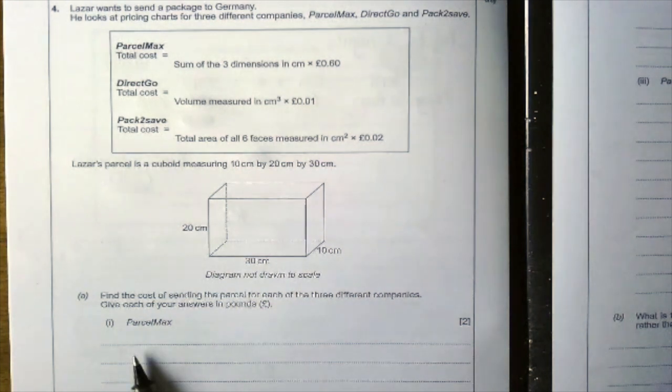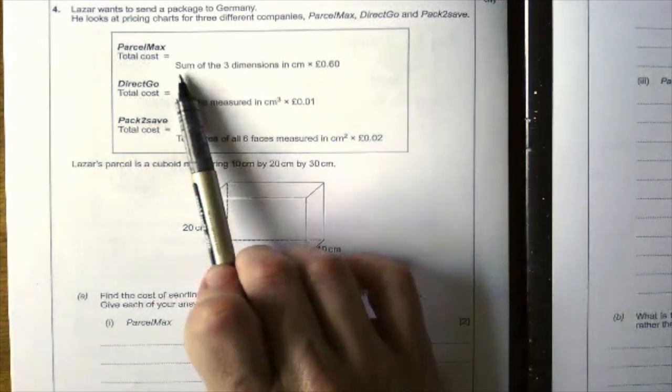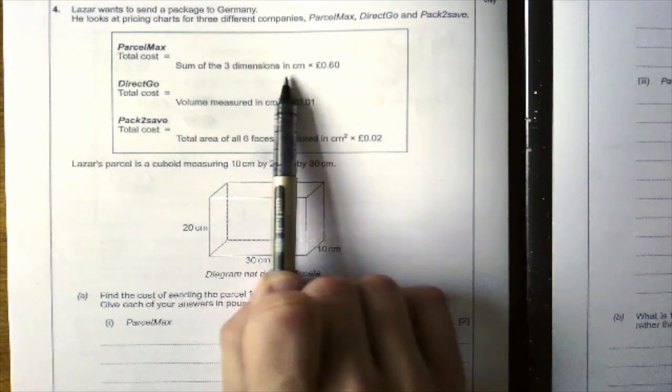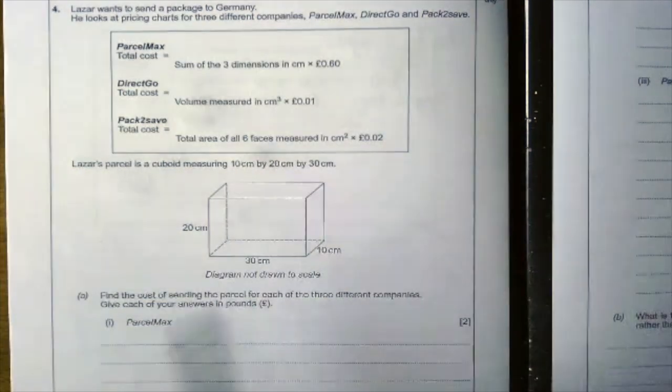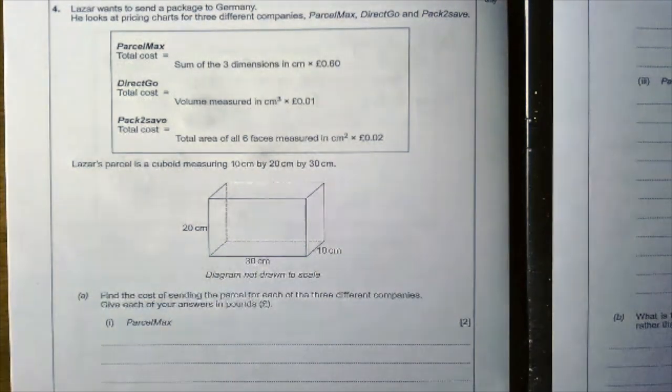So the first one is ParcelMax. It's the sum of the three dimensions in centimeters times by 60p. Now sum means just to add them.